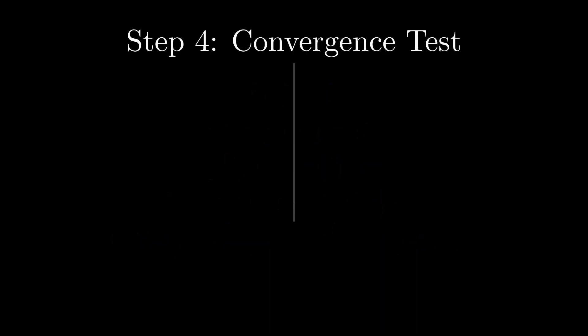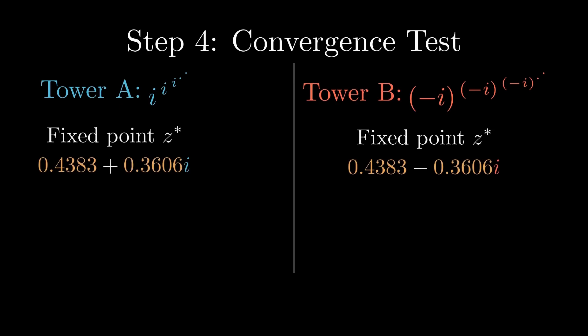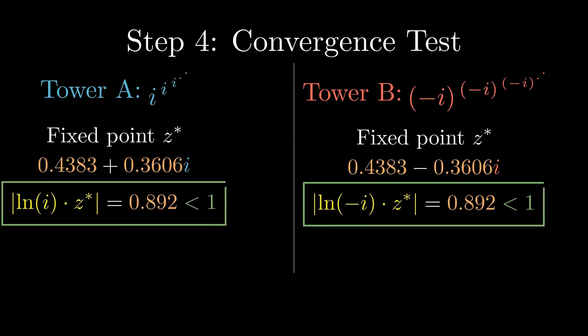Now let's apply this test to both towers. For tower A, based on i to the i to the i, the fixed point is approximately 0.4383 plus 0.3606 i. The magnitude of log i times z star is about 0.892, which is less than 1.